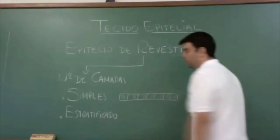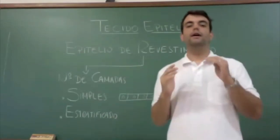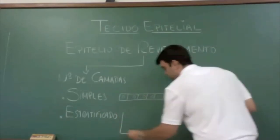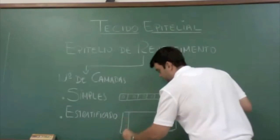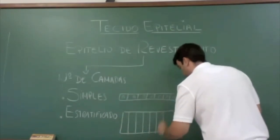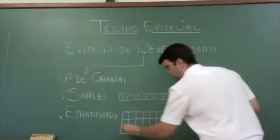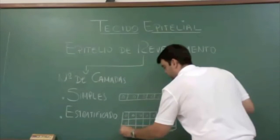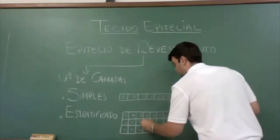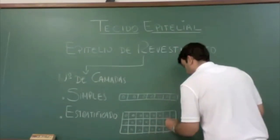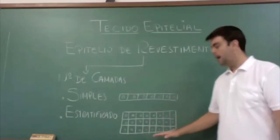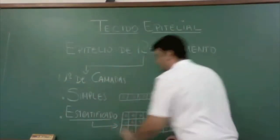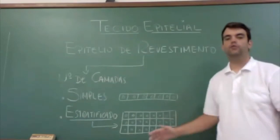O epitério estratificado é quando eu tenho as células organizadas em dois ou mais folhetos, ou seja, mais de uma camada de células.